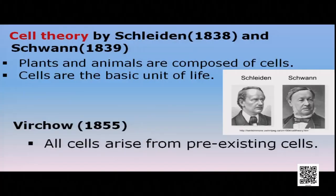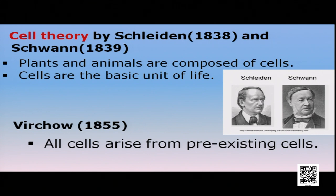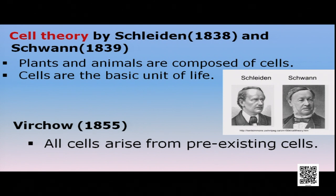Cell theory was first put forward by Schleiden and Schwann in 1838 and 1839 respectively. Their theory stated that plants and animals are composed of cells, and cells are the basic unit of life. Then in 1855, Virchow added another statement to the theory: all cells arise from pre-existing cells. This means all new cells are formed from old ones — new cells do not appear from nowhere but always arise from existing cells.